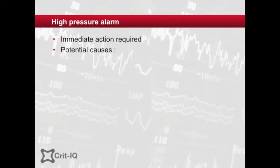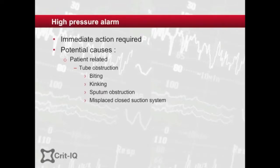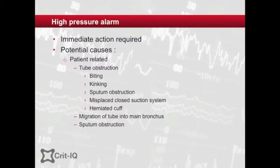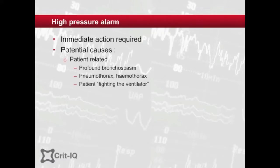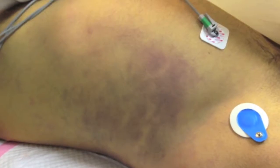Potential causes of the high pressure alarm include tube obstruction — including biting of the tube, kinking, sputum obstruction, a closed suction catheter, and herniation of the cuff over the end. Migration of the tube into a main bronchus, usually the right in adults. Sputum obstruction of the lower airways, profound bronchoconstriction, pneumothorax, or rarely haemothorax, straining of the patient against the ventilator — often as an attempt to breathe dyssynchronously — and extra-pulmonary decreases in compliance, such as intra-abdominal compartment syndrome.